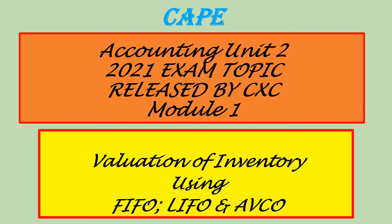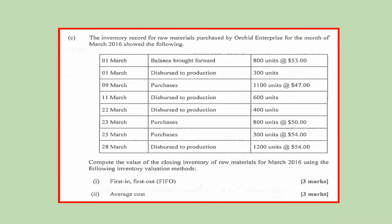Good day and welcome to another Mr. James accounting tutorial — this might be the last for this year. Today we are going to look at the valuation of inventory using FIFO, LIFO, and average cost. We have before us a question from the 2017 Paper 2 which deals with inventory valuation. Although it only asks for FIFO and average cost, we will also use it to illustrate LIFO.